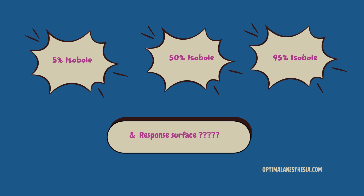In complex scenarios with multiple drugs, we turn to response surfaces. These are like 3D maps that help us navigate the intricate landscape of drug interactions. They show how combined drug concentrations affect various clinical outcomes — it's like having a GPS for anesthesia.